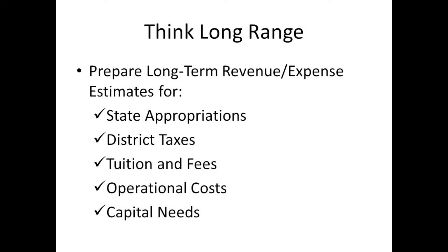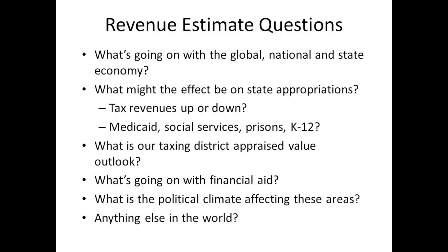As a board, think long range. What we do is build the budget and look with our board at long-term estimates of what we think is going to happen in state appropriations, all our revenue streams, operational costs, and capital needs. When making revenue estimates, we look at what's going on in the global, national, and state economy — what might be the effect on state appropriations, whether tax revenues are up or down, what's happening with sales taxes, and what could affect the pool of money that in the next biennium will affect our share.